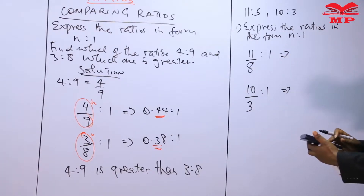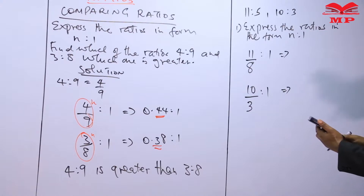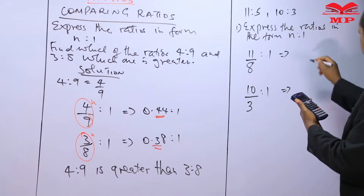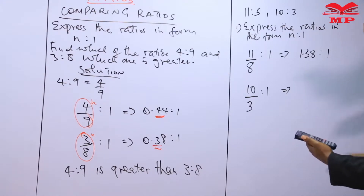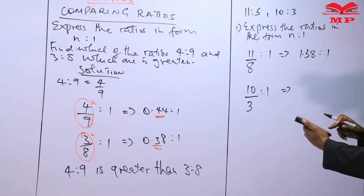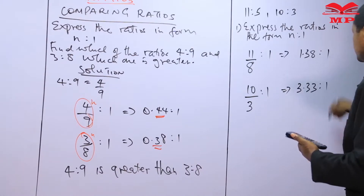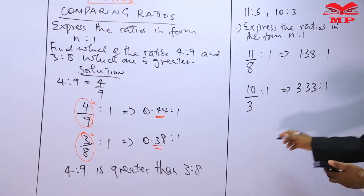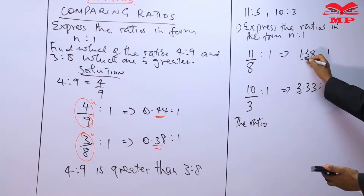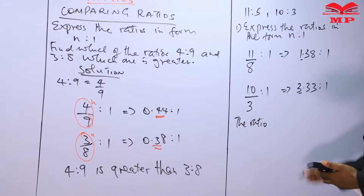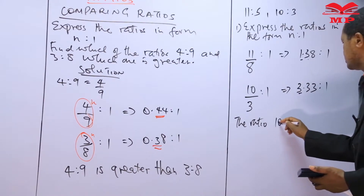Converting eleven divided by five gives one point three eight to one. Then ten divided by three gives three point three three to one. Between three point three three and one point three eight, three point three three is greater, which means the ratio ten to three is greater.